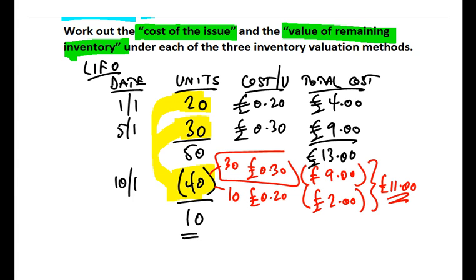Now, what you can imagine is if we compare that £11 to the revenue generated on the sale, well, the fact you're comparing a higher cost means that under LIFO, the profit shown would be lower.